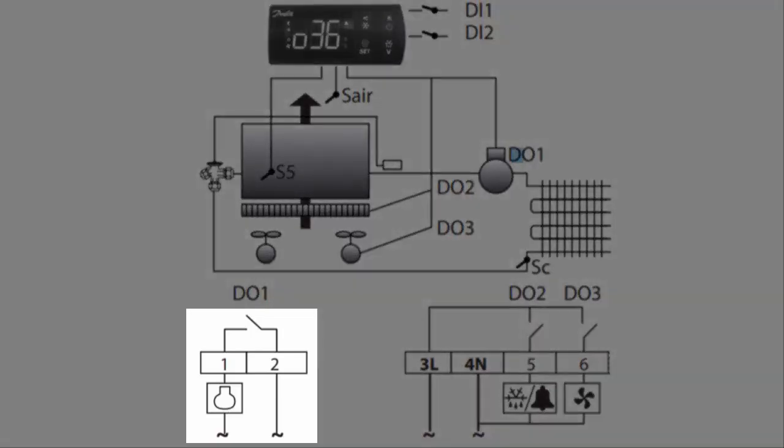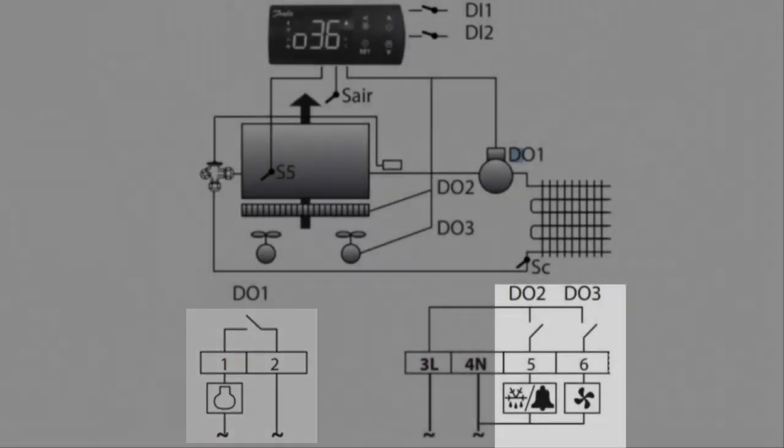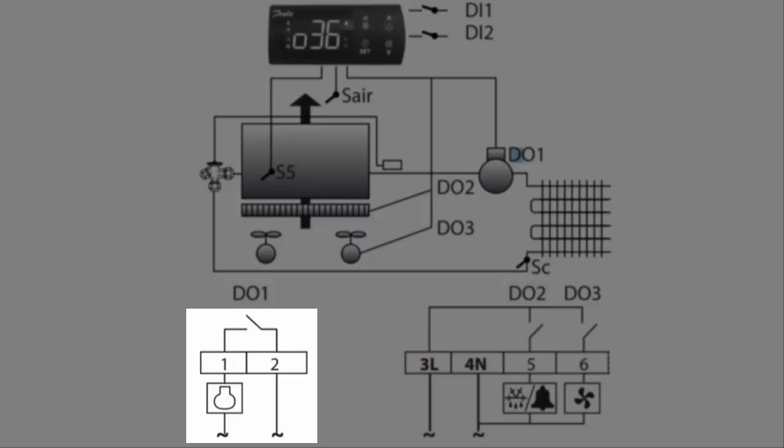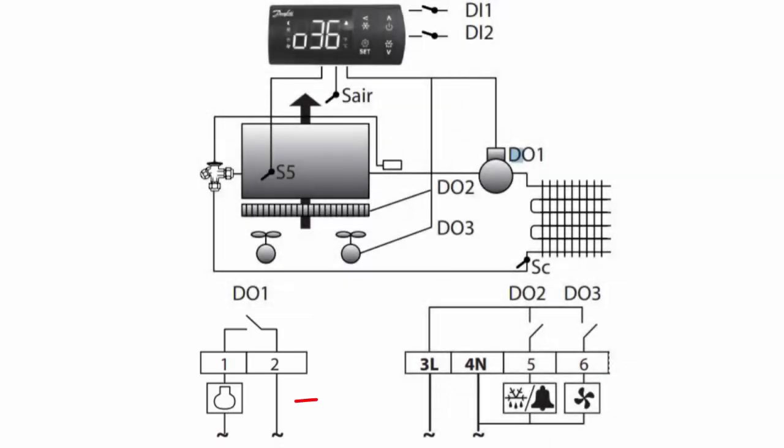First, so you know which is which: DO1 on the left side is a dry contact. Terminals one and two are dry contacts; five and six are wet contacts. Five is used for alarm or defrost - the symbol looks like a melting snowflake. Six is a fan. Here's how this works.